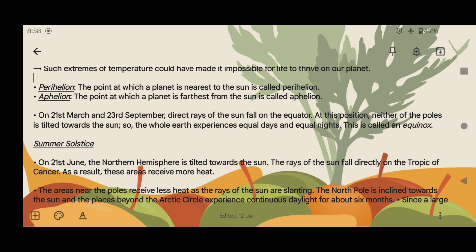On 21st March and 23rd September, direct rays of the sun fall on the equator. At this point, neither of the poles is tilted toward the sun, so the whole Earth experiences equal days and equal nights. This is called equinox.